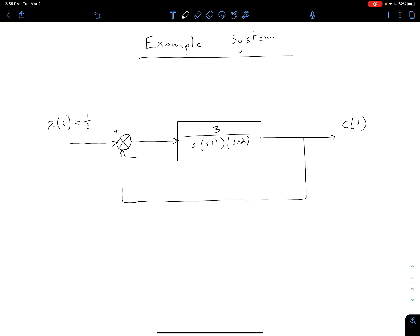Let's consider an example system. We see we have a pretty simple feedback configuration here. We have some forward gain which is 3 over s times s plus 1 times s plus 2. We then have unity feedback which is being subtracted from our input.